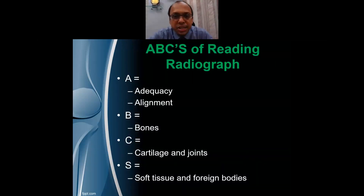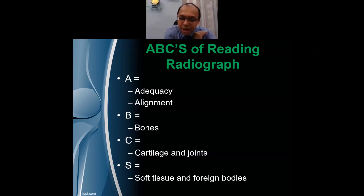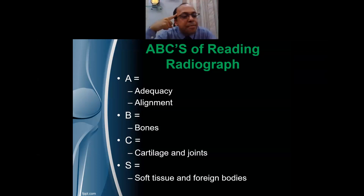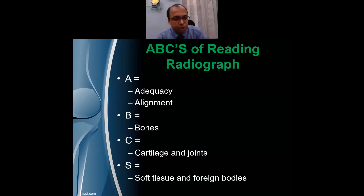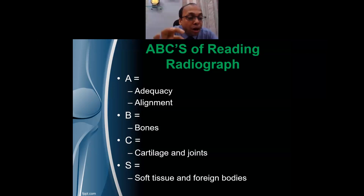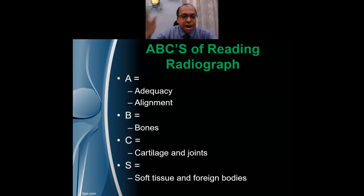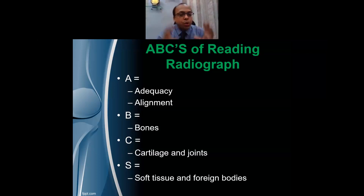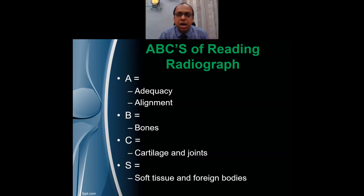Please do not forget the ABCs of radiograph. Write it down: A is Adequacy and Alignment, B is Bones, C is Cartilage and Joints, S is Soft Tissue and Foreign Body. I want you to look at x-rays in a very structured, step-by-step manner — first bones, then adequacy, then soft tissue and foreign body if present.